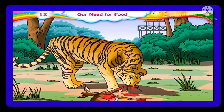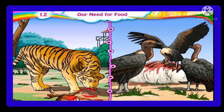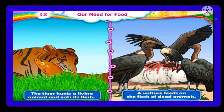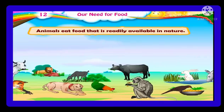Many times foxes dare to enter human settlements, but they are not as strong as tigers and cannot kill cattle — they are mostly content with stealing fowl. The tiger hunts a living animal and eats its flesh, while a vulture feeds on the flesh of dead animals. Animals eat food that is readily available in nature, and we see many differences in what animals eat.